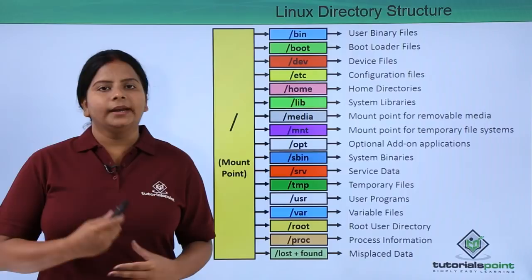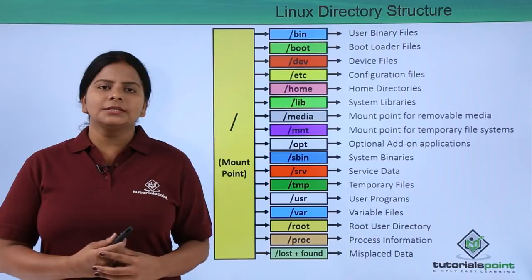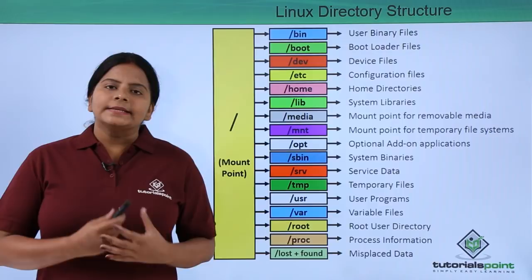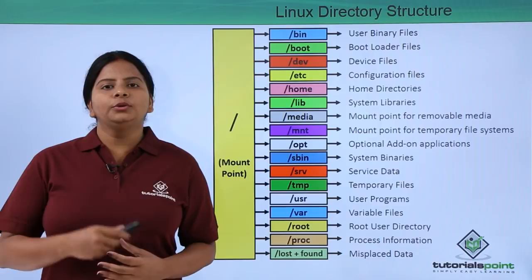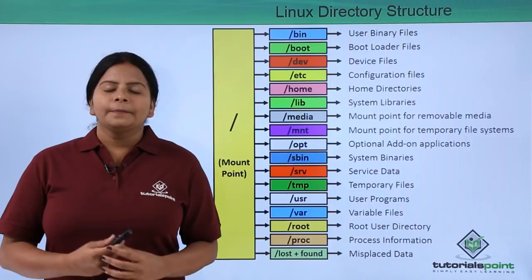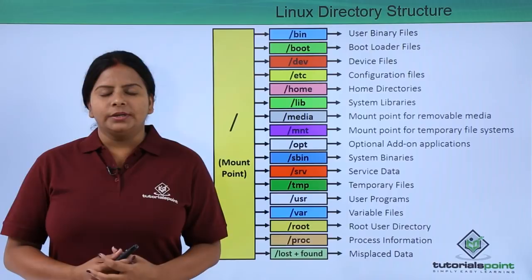Next we have `/boot`. Like Windows, which has a system reserved partition containing booting files, Linux also has all booting files installed in this directory by default. When you install the Linux operating system, the booting files get loaded into `/boot`. Here you will find GRUB or GRUB 2 as your booting file. In earlier versions of Linux you also used to find LILO as the bootloader.